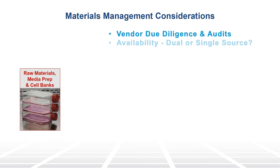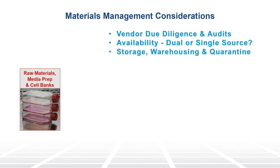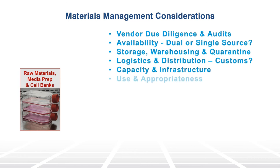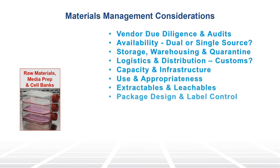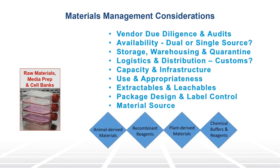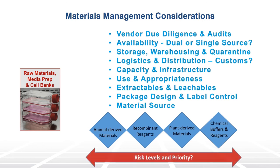Materials management is paramount. Due diligence of where and how all raw materials are procured and prepared is necessary. Shipping evaluation studies need to be considered. Mammalian cell culture has the added risk of propagating adventitious agents including virus, and these contaminants can come from any material. See our other videos on viral safety control strategies.